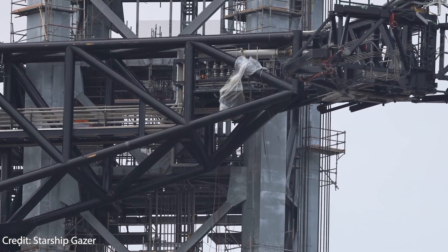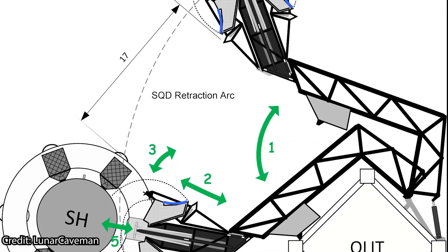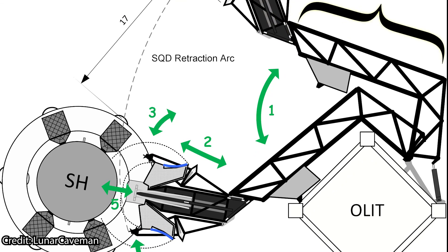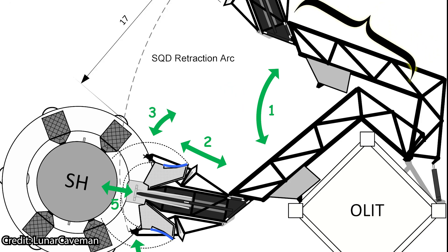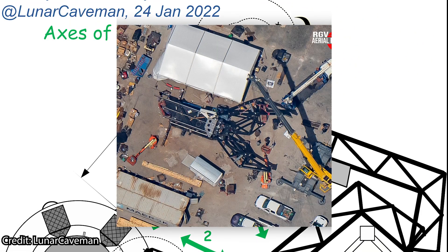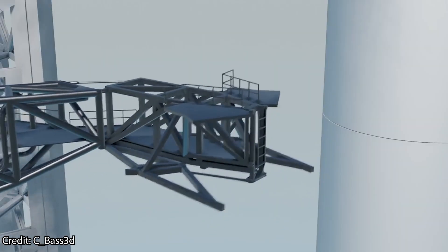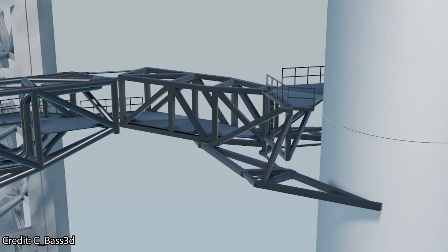Let's begin by looking at the different parts that compose the quick disconnect arm. First we have the main structure of the arm which is made up of two parts. One of them is the main body, attached to the side of the tower and which can move toward it or away from it as required. The second part is the so-called QD arm extension which includes the claw that will grab the upper part of the booster, helping stabilize it while also feeding the Starship sitting on top.